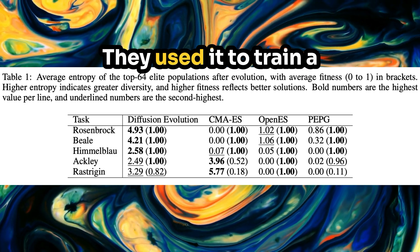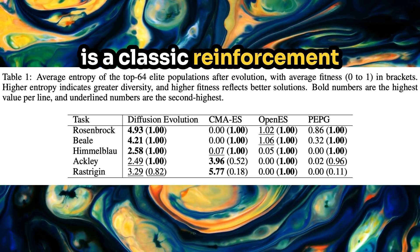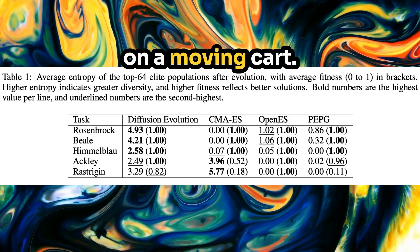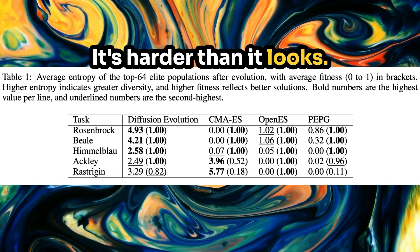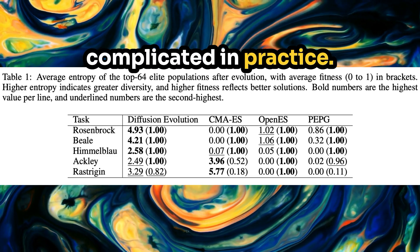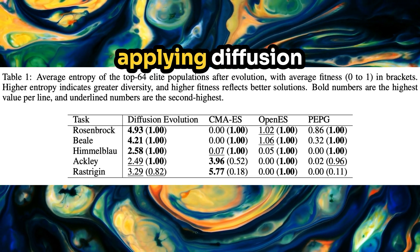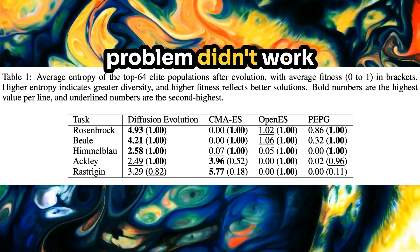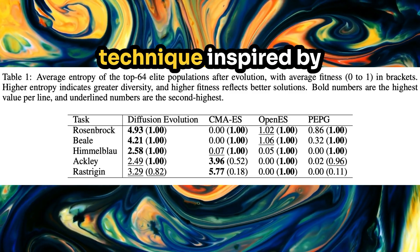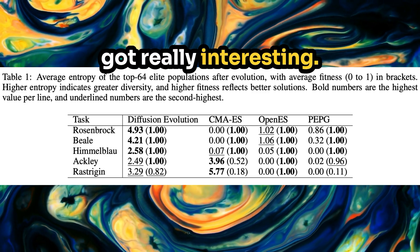They used accelerated sampling to train a neural network to control a cart pole system, which is a classic reinforcement learning problem — imagine trying to balance a pole upright on a moving cart. It's one of those simple physics demos that's always way more complicated in practice. At first, directly applying Diffusion Evolution to the cart pole problem didn't work as well as they hoped, but then they got creative and used a technique inspired by latent space diffusion models, and that's when things got really interesting.